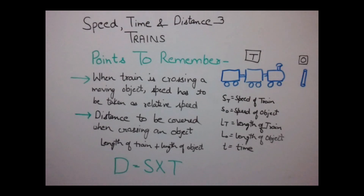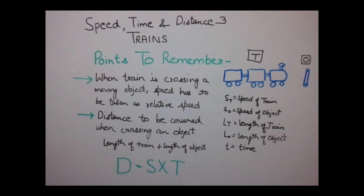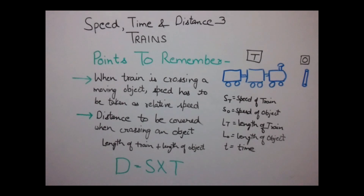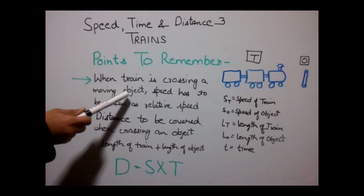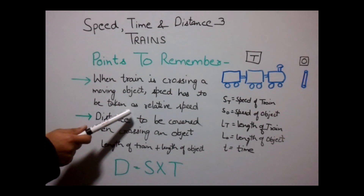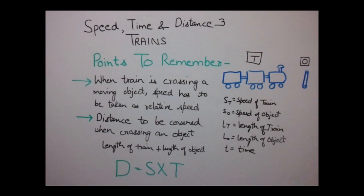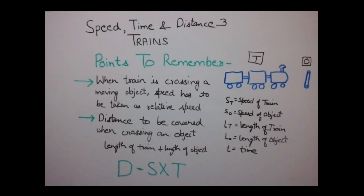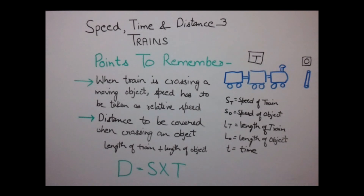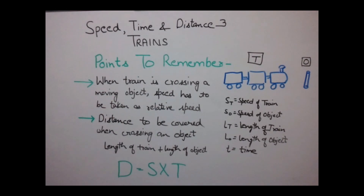Before moving to solve the examples, let me tell you that there are some points which you need to remember while solving problems. The first point is that when a train is crossing a moving object, speed has to be taken as relative speed. The concept of relative speed has been discussed in earlier class, and all the rules applicable to relative speed will also apply when solving problems on trains.